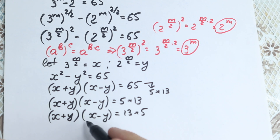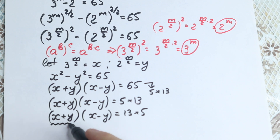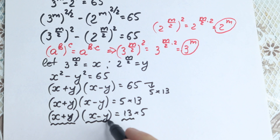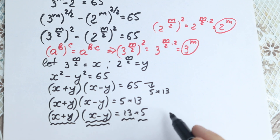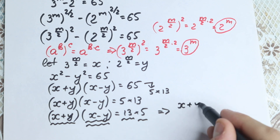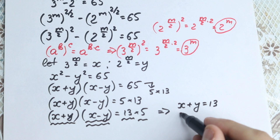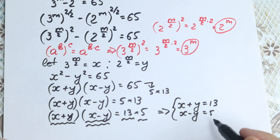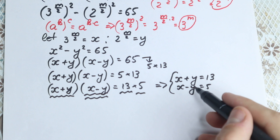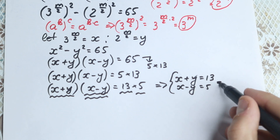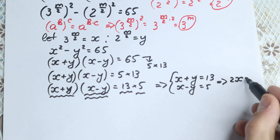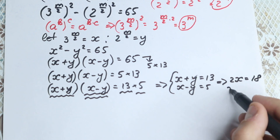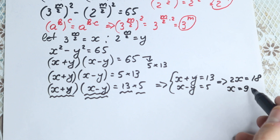We have variables in parentheses but it doesn't matter. We get the system: x plus y equal to 13, and x minus y equal to 5. We add both equations to cancel y, giving 2x equal to 18, so x equal to 9.